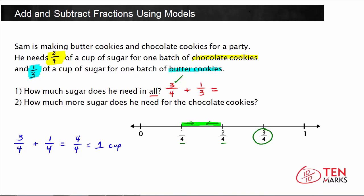For the upper estimate, we use the higher benchmark since 1 third is less than 2 fourths. So 3 fourths plus 2 fourths equals 5 fourths, which simplifies to 1 and 1 fourth cups — and this is the high estimate. That means our answer will fall somewhere between 1 and 1 and 1 quarter cups for both recipes in all.